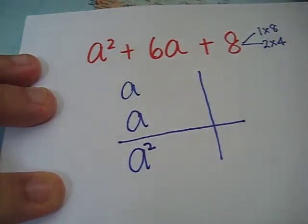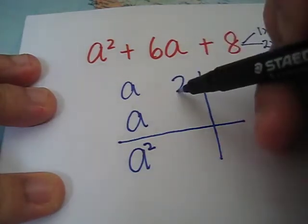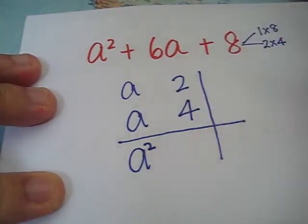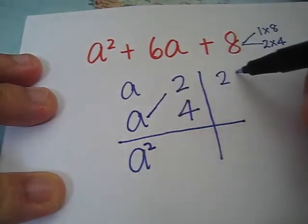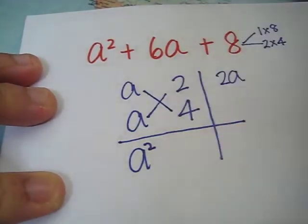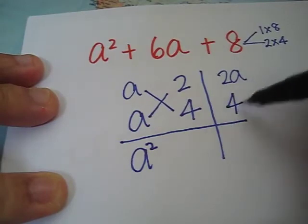Compare these two terms. This is likely to result as 6 when we sum up the numbers. So, let's try 2 and 4. a times 2 will give us 2a. a times 4 will give us 4a.